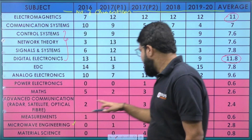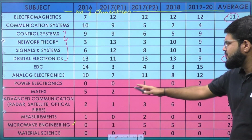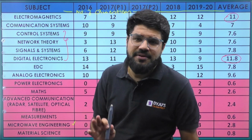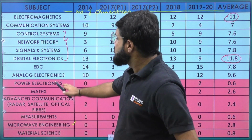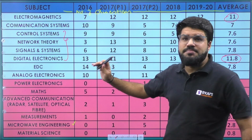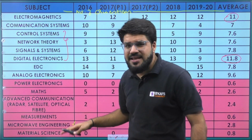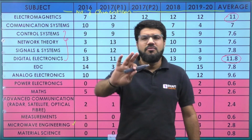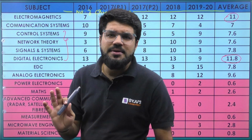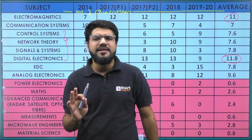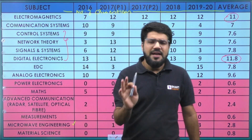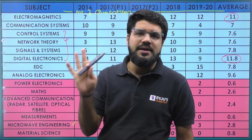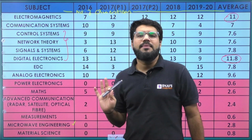Mathematics: they ask around two to four questions on average, approximately 2.6. For other branches like electrical and civil, more math questions appear, but for EC it's less. However, the math asked is from the GATE syllabus. The key topics to focus on are calculus, algebra, and probability — especially probability with random variables.